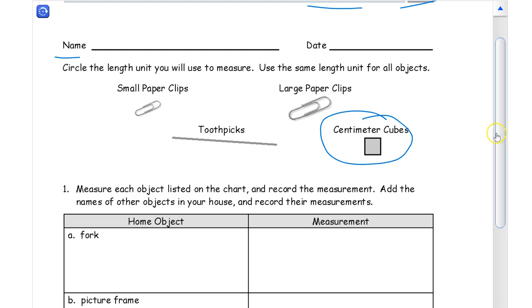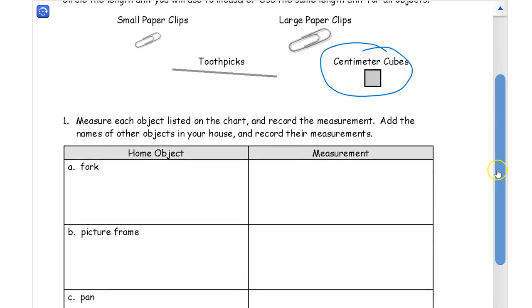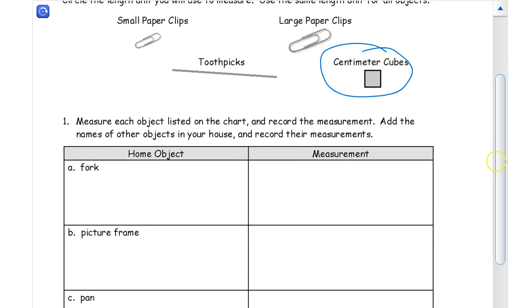But make sure the big idea for this one is the unit. So if it's going to be centimeter cubes and you're measuring a fork, then you don't want to just write a number here. Like say 10, for example, just to pick a number.